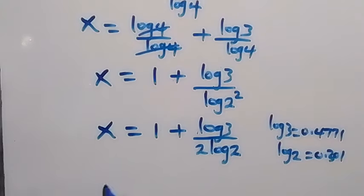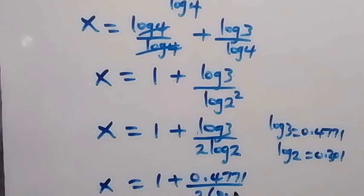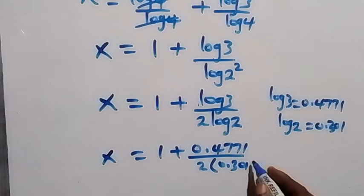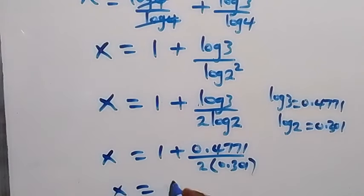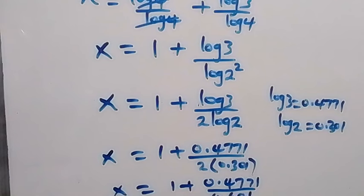When we substitute that here, we have x equals 1 plus 0.4771 over 2 times 0.301. From here when we solve this, we have x equals 1 plus 0.4771 divided by 0.602.